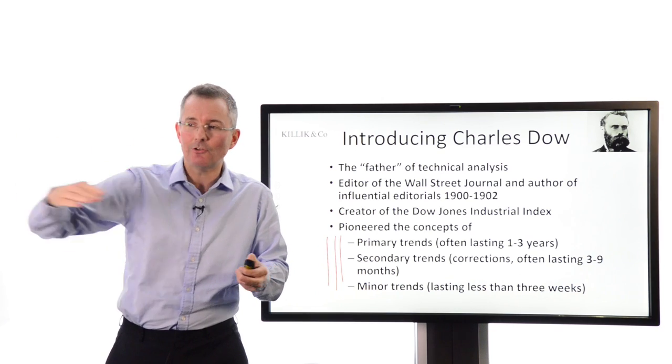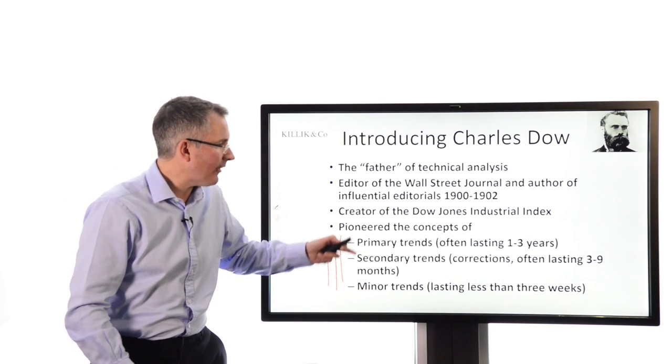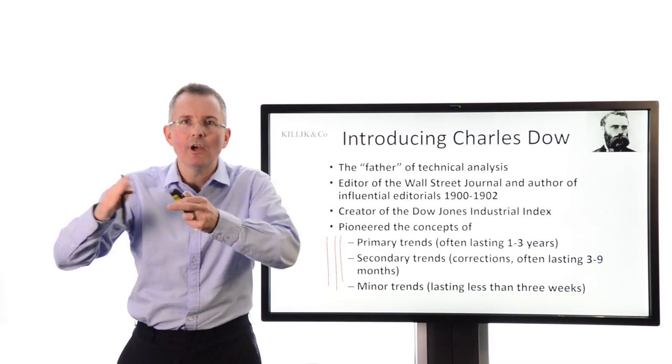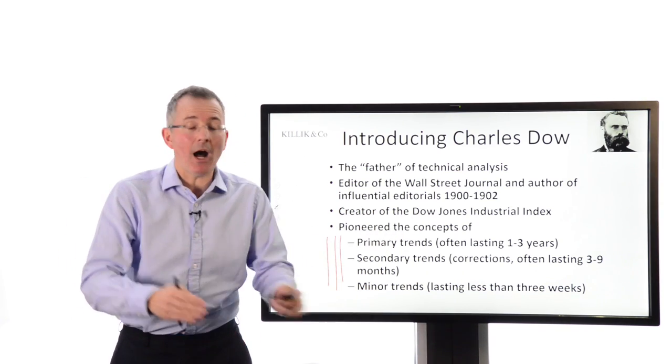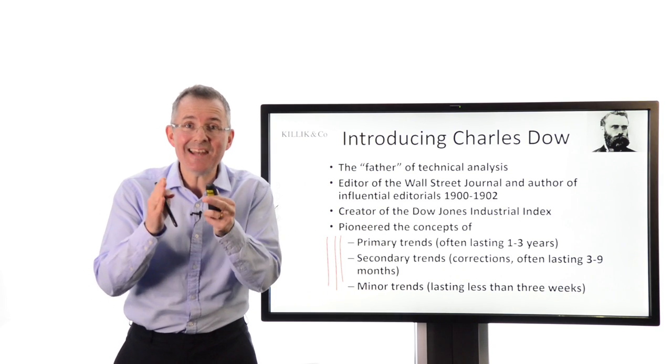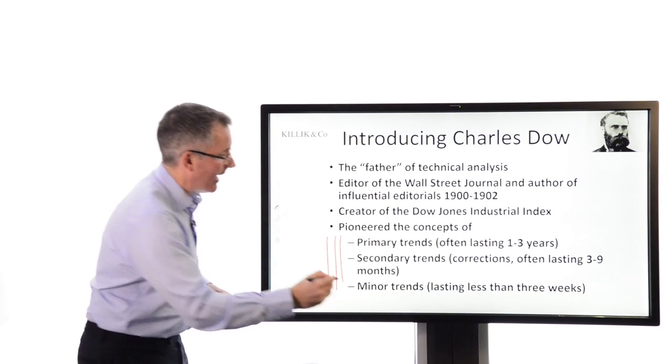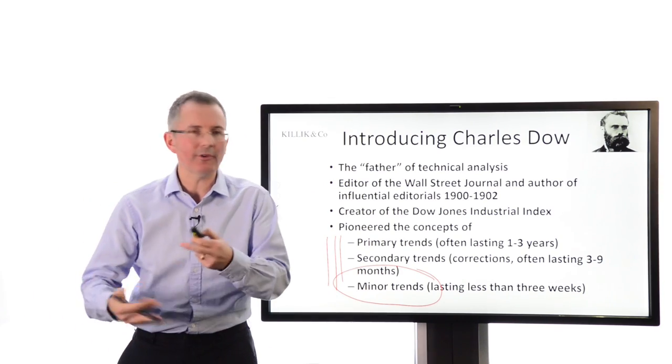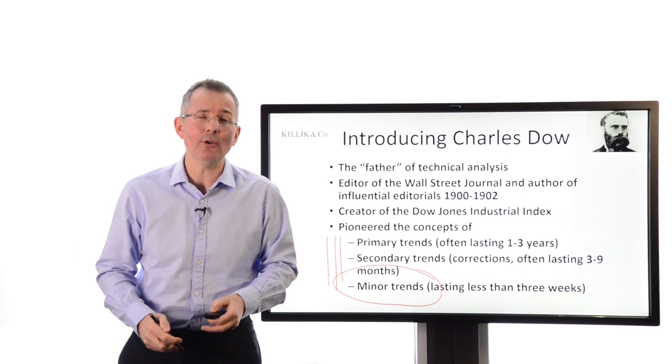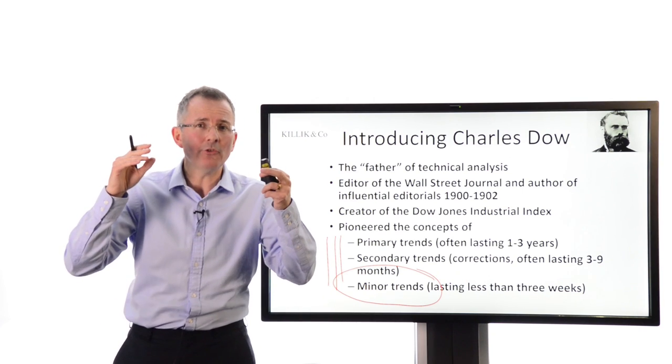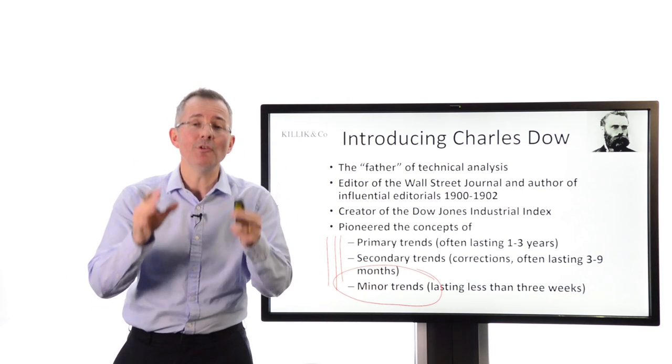Now this is just an introductory video, but if you're a chartist, if you're a technical analyst, these are important concepts. This is putting a bit of meat on some of the fluff I've been talking about so far. It's the idea that you can identify, if you know what you're looking for, three types of trend in financial markets: primary trends - big ones, bull and bear phases lasting one to three years.